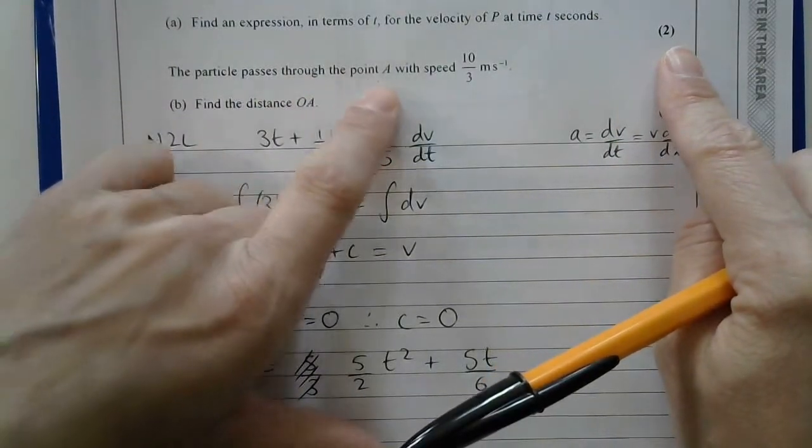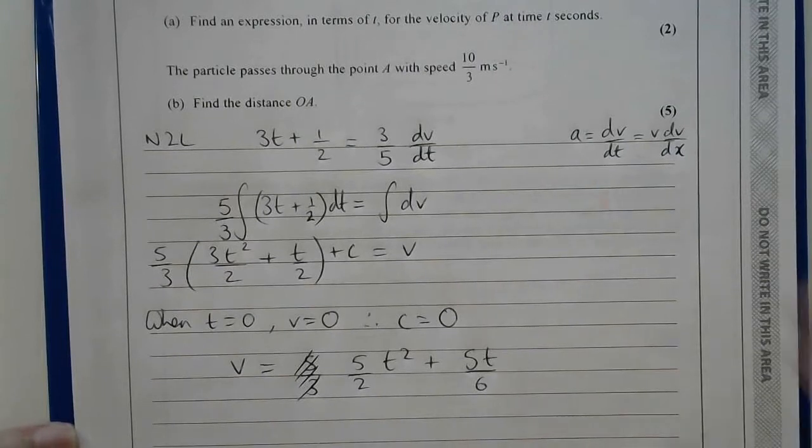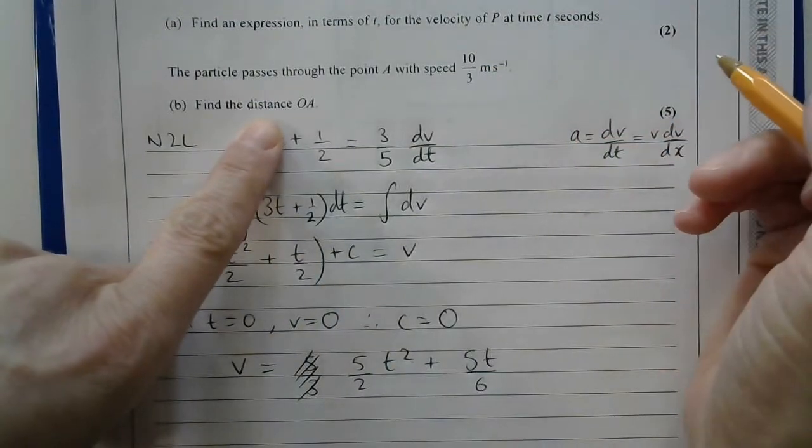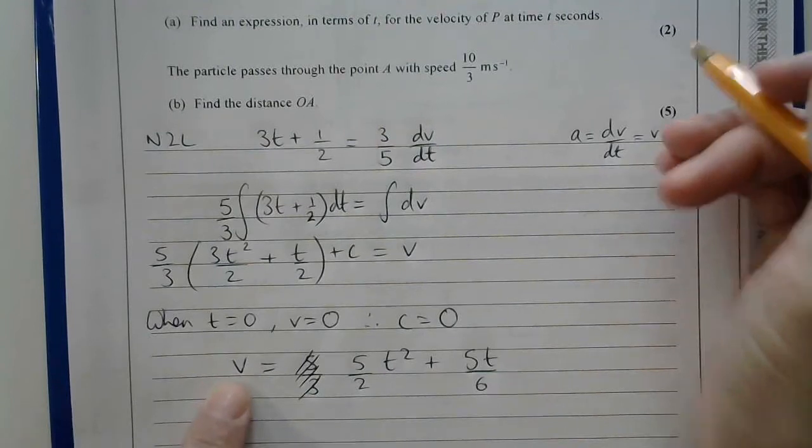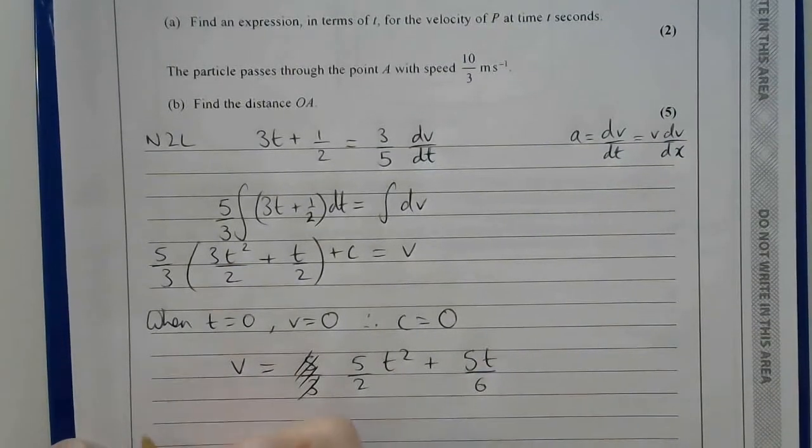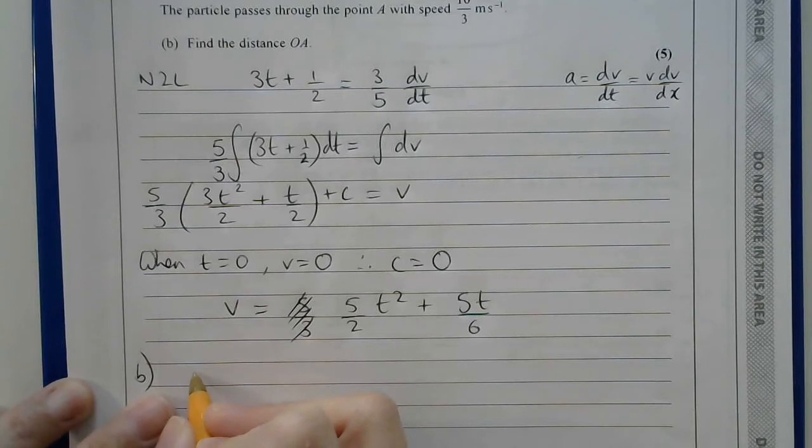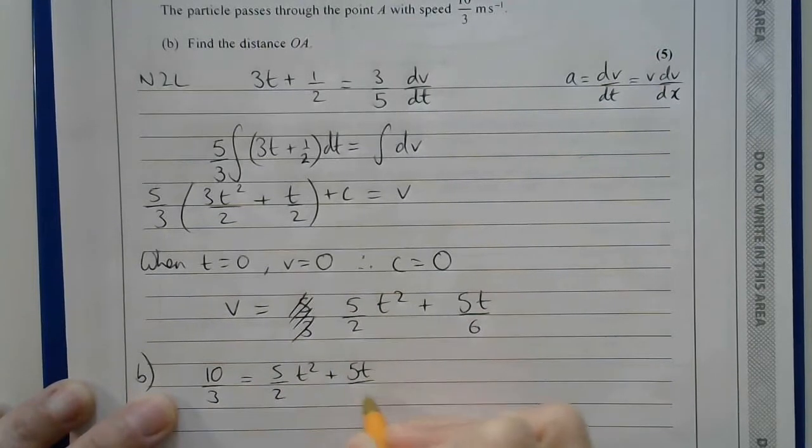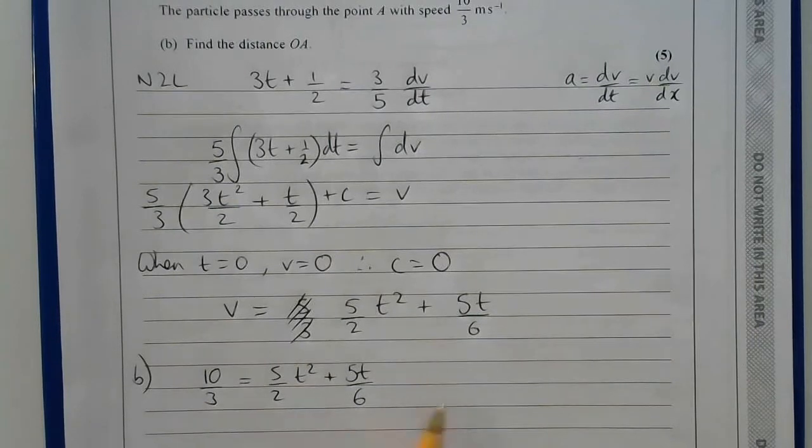Then it says the particle passes through point A with speed 10/3 m/s. Find the distance from O to A. So if I put that v into here, then I could find out the value of t at that point. But really, I want the relationship with the distance and time. So in that case, I could rewrite v as dx/dt, and then separate and integrate again.